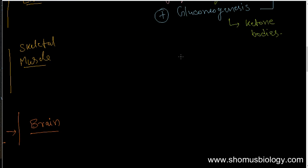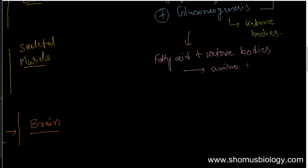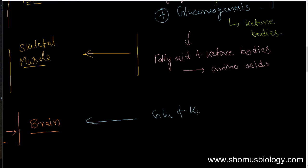While ketone bodies and glucose are both produced, in skeletal muscle fatty acids and ketone bodies are used as fuel, and amino acids are also released from the skeletal muscle. Once glucose and ketone bodies are released, the brain can take up both ketone bodies and glucose — I mentioned the brain mostly feeds on glucose, but apart from that it also feeds on ketone bodies.